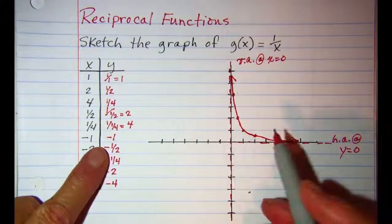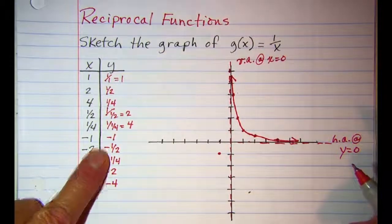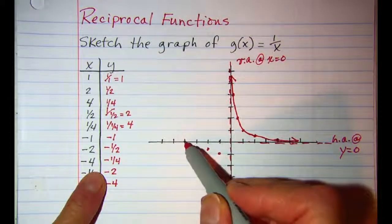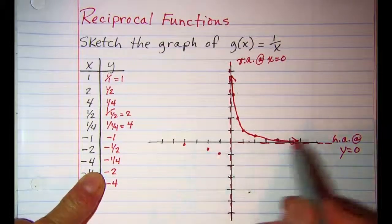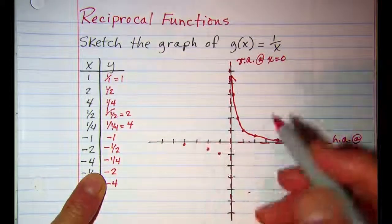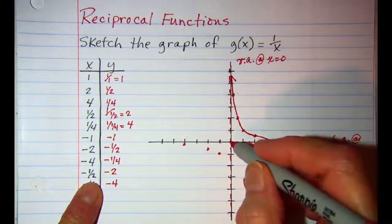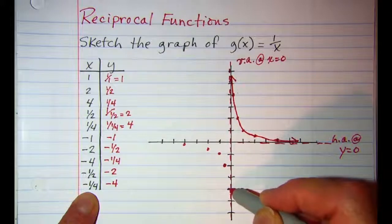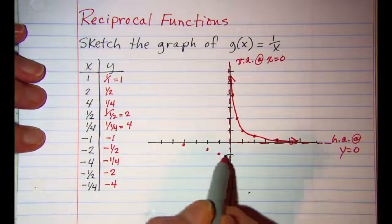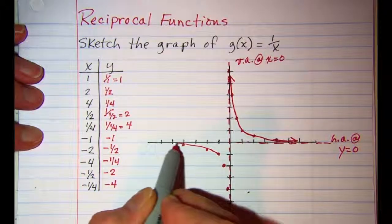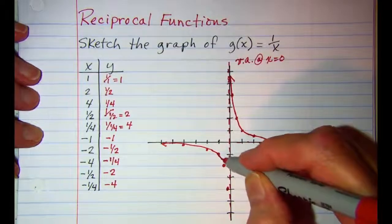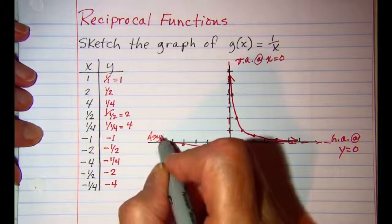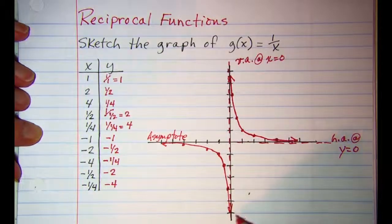Now let's plot the negative side. For x equals negative one we have negative one. When x is negative two we have negative one half. When x is negative four we have negative one fourth — it's behaving very much like it did on the positive side, getting closer and closer to the x-axis. When x is negative one half we have negative two, and when x is negative one fourth we have negative four. So our curve on this side follows the same pattern, and again we have our horizontal asymptote and our vertical asymptote.